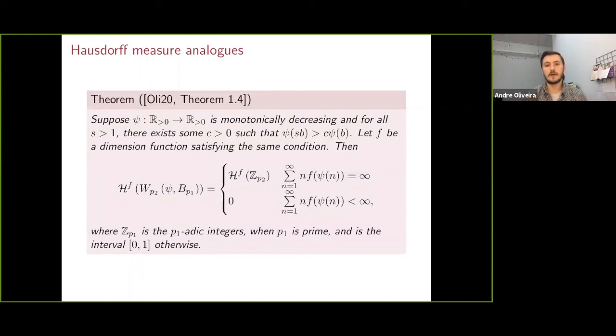where f is some gauge function, or a dimension function. And in this case, we see that we have a very similar Khinchin-type analog statement in the Hausdorff case that helps us distinguish what's going on with these sets.